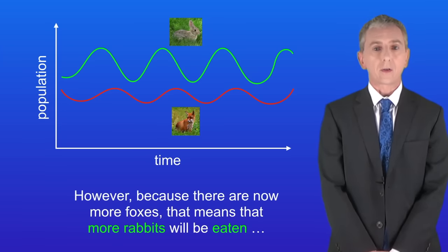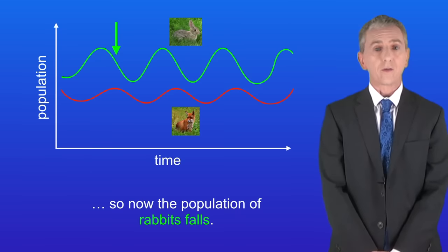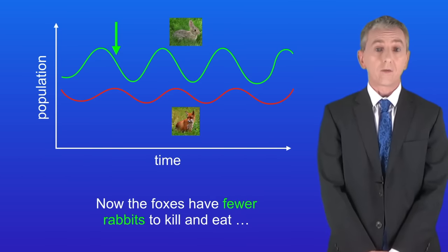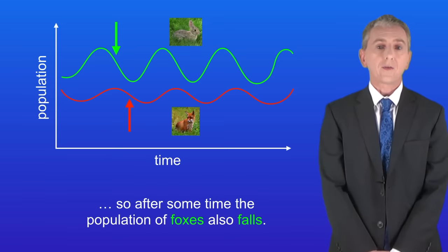However because there are more foxes that means that more rabbits will be eaten so now the population of rabbits falls. Now the foxes have fewer rabbits to kill and eat so after some time the population of foxes also falls.